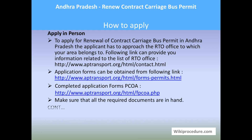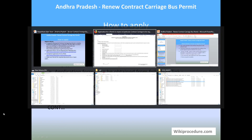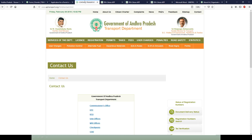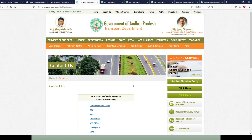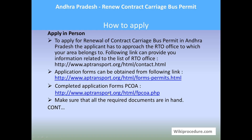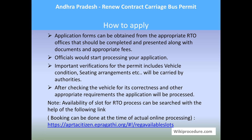In order to apply for renewal of contract carriage bus permit in Andhra Pradesh, one has to go to the RTO office for their area. Don't worry if you don't find your local RTO address — please use the contact link provided here to reach the official contact page of the Andhra Pradesh Transport Department, from where you can filter further to find your local RTO office. Download the form required for this procedure using the links provided, and make sure you have all the required documents before applying, because missing even one document may result in your application being rejected. Application forms can also be obtained directly from the RTO office when you visit.